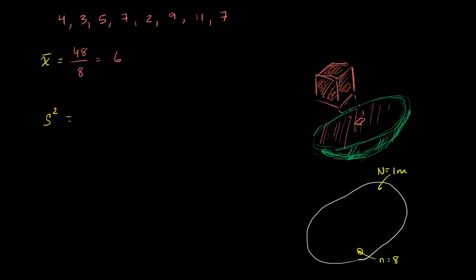So we're going to calculate the unbiased sample variance. And if we do that, what do we get? Well, it's just going to be four minus six squared, plus three minus six squared, plus five minus six squared, plus seven minus six squared, plus two minus six squared, plus nine minus six squared, plus 11 minus six squared, plus seven minus six squared.